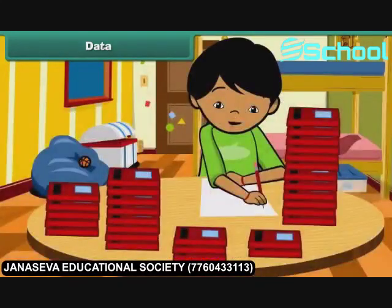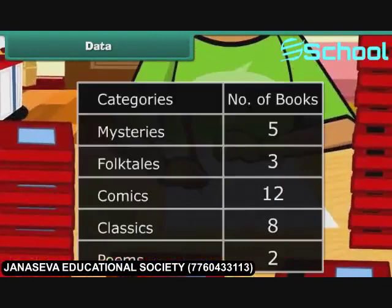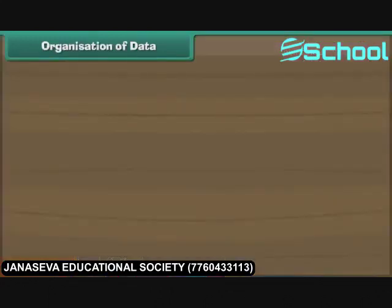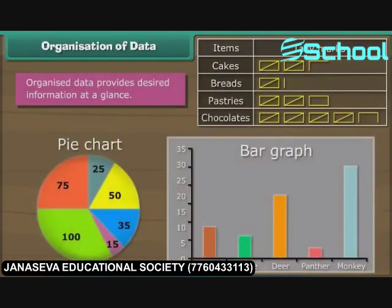When Ravi reaches home, he divides the 30 books into five different categories of comics, mysteries, folk tales, classics and poems. Here is how he summarized the details in the form of a table. Such arrangement of figures is called organization of data. Organized data provides desired information at a glance. We can organize data using tally marks, pie charts and bar graphs.